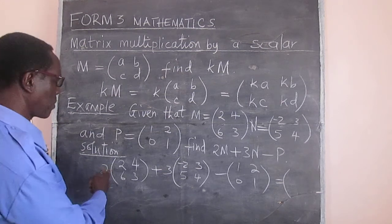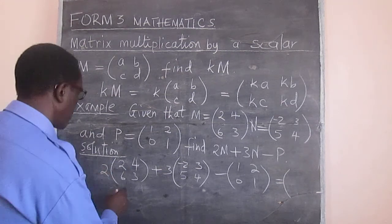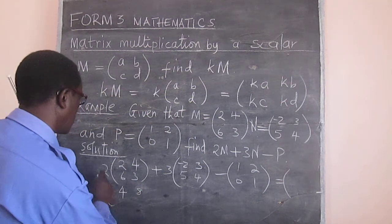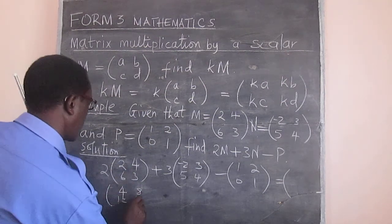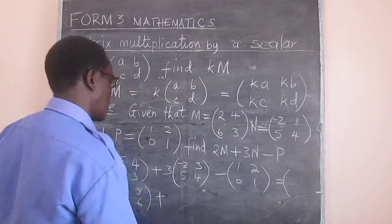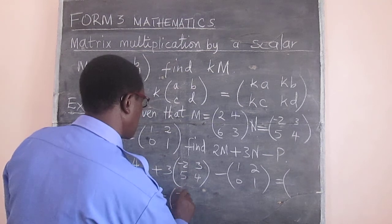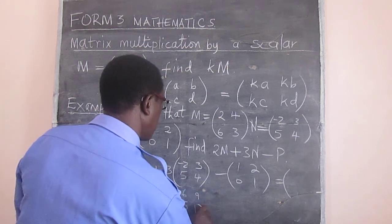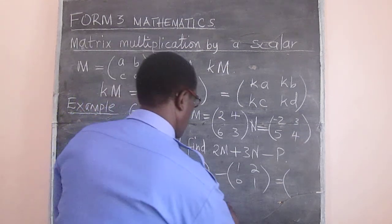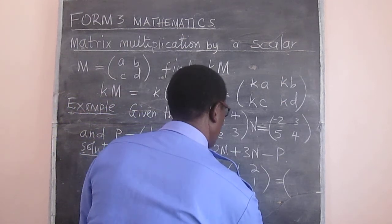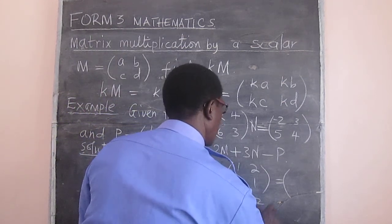When we multiply M by 2 we get 4, 8, 12, and 6. When we multiply N by 3 we get negative 6, 9, 15, and 12. And P is just multiplied by 1, so it remains 1, 2, 0, 1.